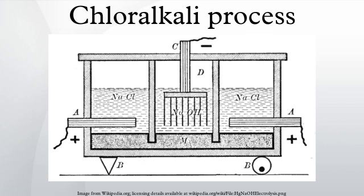The overall reaction for the electrolysis of brine is: 2NaCl + 2H₂O → Cl₂ + H₂ + 2NaOH. A membrane cell is used to prevent the reaction between the chlorine and hydroxide ions.